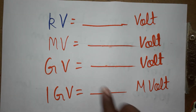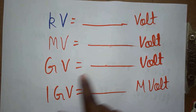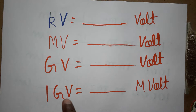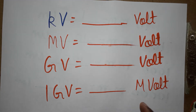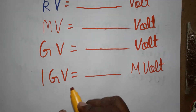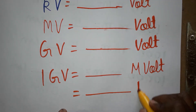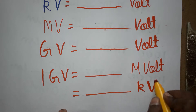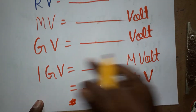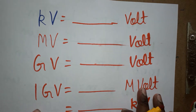Today we are going to learn how to convert from KV to V, MV to V, GV to V, GV to MV, and also GV to KV and GV to V. Already we know GV to V.